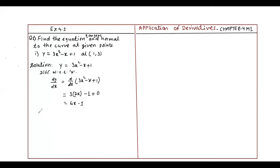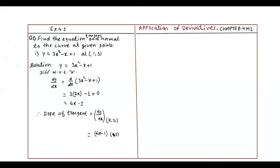x squared becomes 6x; so dy by dx equals 6x minus 1. This is your slope. The slope of tangent at point (1, 3): substitute x equals 1 — 6 into 1 minus 1 equals 5.